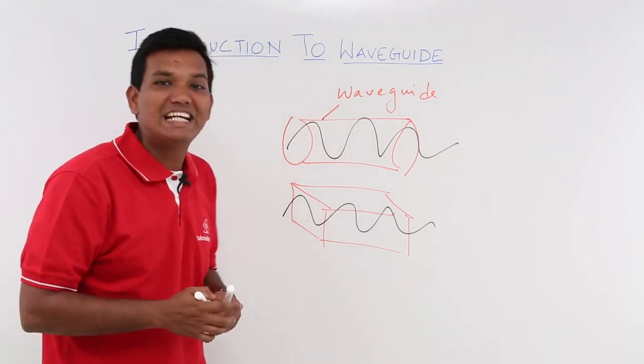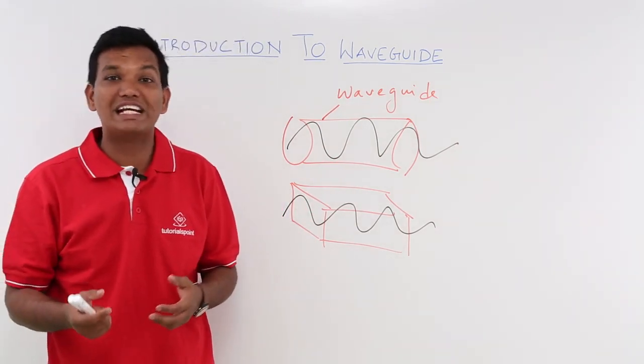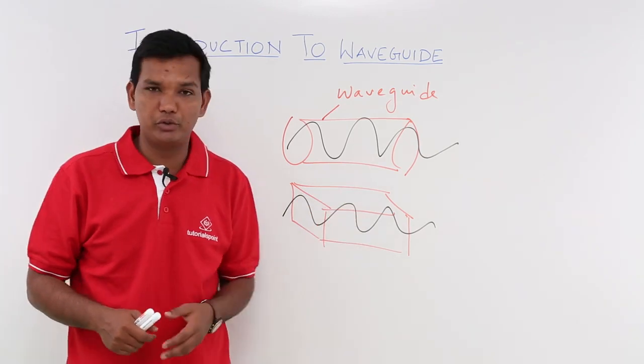Basically, a waveguide is the guiding structure which will guide the wave to flow from one point to another point.